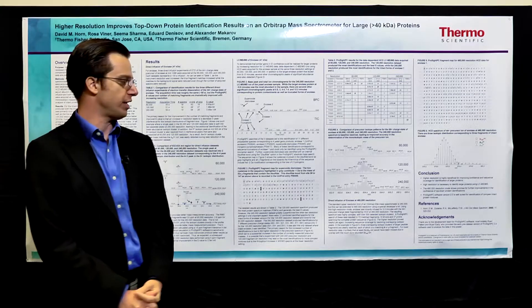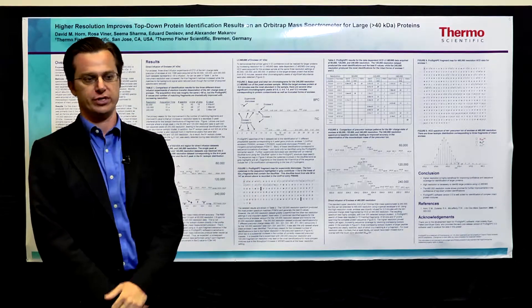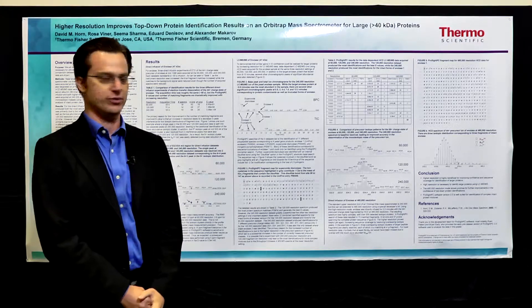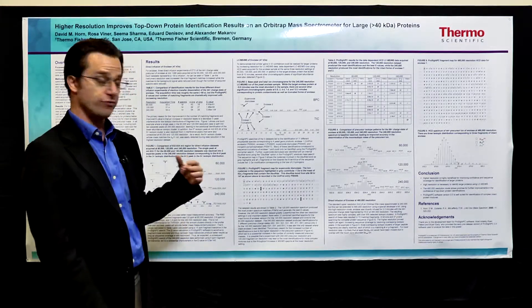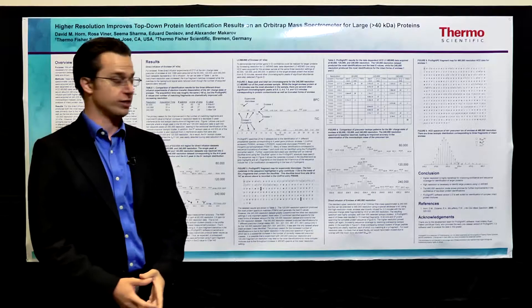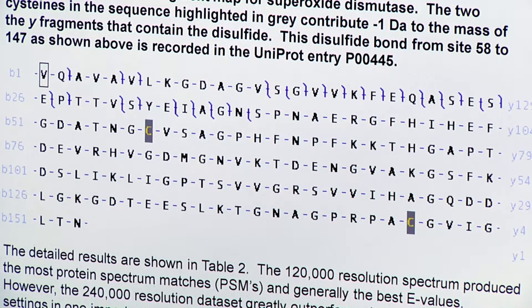Another thing that we identified in this data set was a protein called superoxide dismutase, a very highly abundant protein. It's not necessarily supposed to be in a sample labeled enolase, but it was there. And one of the powerful features of ProSite PC is a mode called disulfide mode. So when we identified this protein,